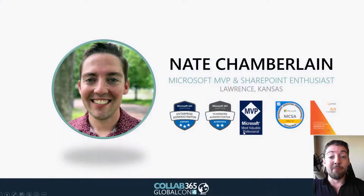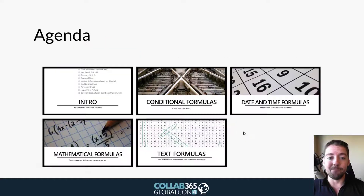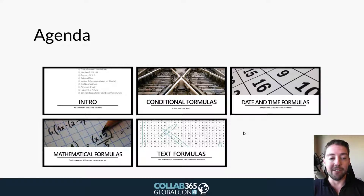My name is Nate Chamberlain. I am a Microsoft MVP in Office 365 Apps and Services. I love everything in Microsoft, especially when it comes to collaboration and enhancing productivity. Today we're going to be talking about four different types of formulas: conditional formulas using if/then, date and time formulas, mathematical formulas, and text formulas — what kind of data you might be able to pull from strings and put those together.